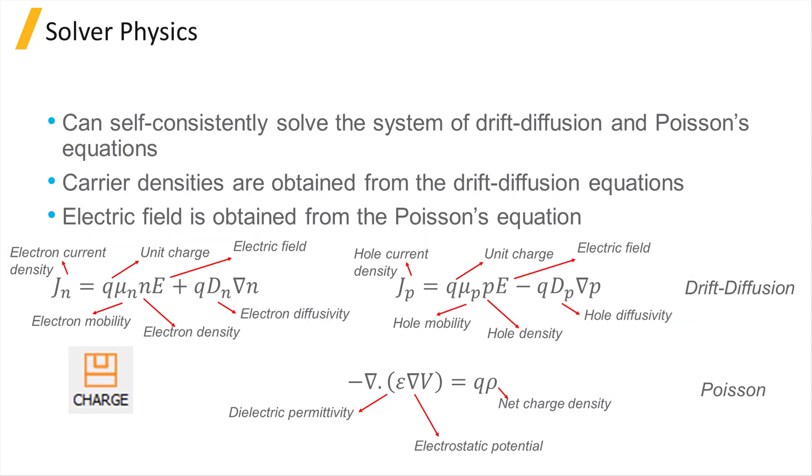In a semiconductor device, each carrier, electron, or hole moves under the influence of two competing processes: drift due to the applied electric field and diffusion due to the gradient in the carrier density.